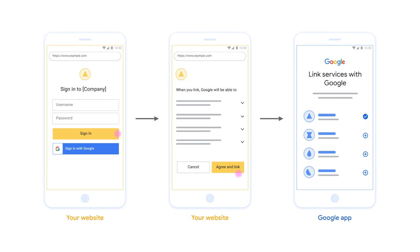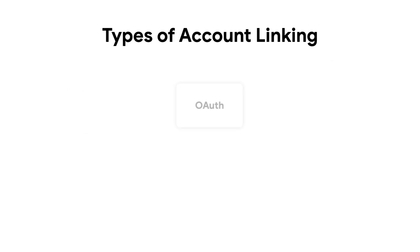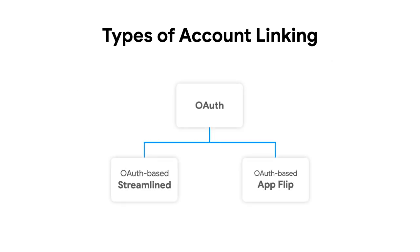Then they're taken back to the Google app when the linking has successfully completed. In this video, we'll look at three types of account linking. First is OAuth, which is the foundation for all account linking integrations using the standard Web OAuth flow. Then we'll also look at Streamline and AppFlip flows, which build on top of your Web OAuth integration.